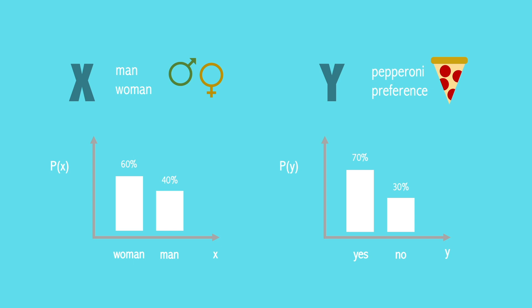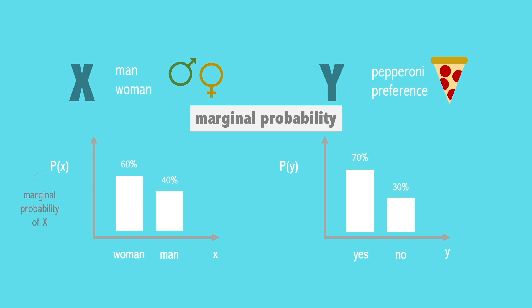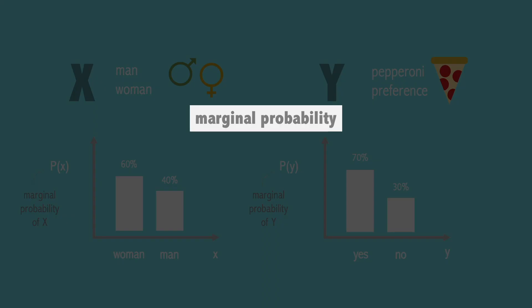These separate probability distributions are called marginal probability distributions. So this is the marginal probability of X and this is the marginal probability of Y. Marginal probability is where we observe the probability distribution of a random variable individually.